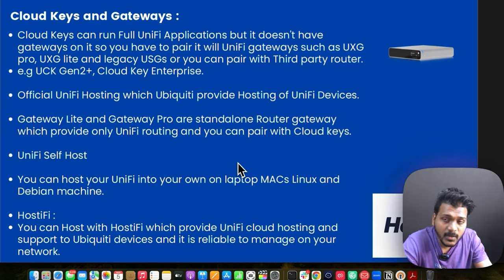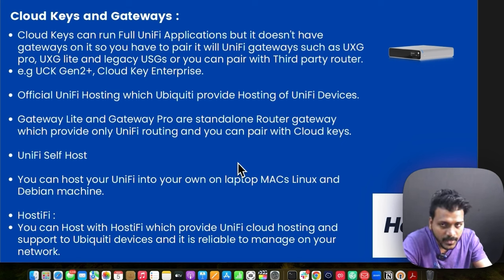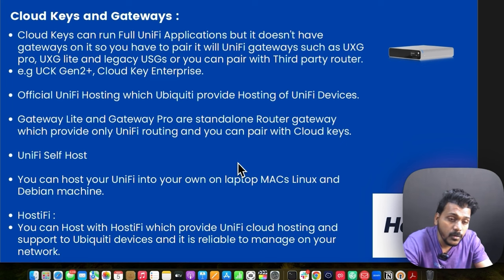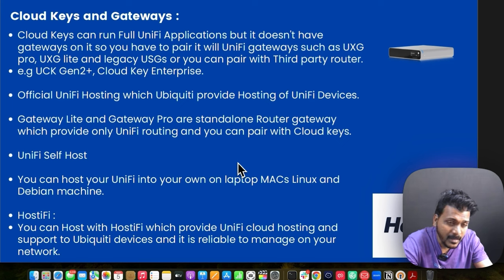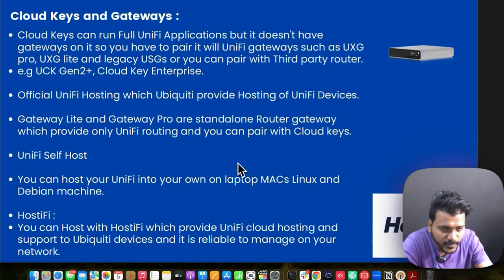Let's check what Cloud Keys and Gateways are. Cloud Keys can run full UniFi applications but do not have any gateway on them, so you have to pair them with UniFi gateways such as the UXG Light, UXG Pro, and older legacy USGs, or you can pair them with a third-party router such as pfSense, SonicWall, MikroTik, or even the Ubiquiti EdgeRouter. Examples are the CK Gen 2 Plus and the Cloud Key Enterprise, as well as the official UniFi hosting that Ubiquiti provides.